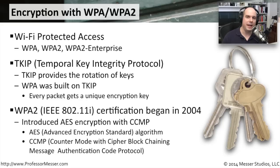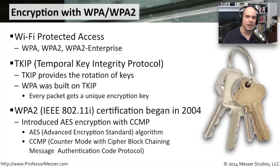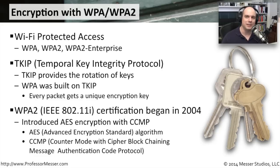In reality, everybody should have moved by this point to WPA2, which was the final certified version of WPA, released in 2004. WPA2 allows AES-level encryption — the Advanced Encryption Standard algorithm — which is a very powerful encryption method. It uses a protocol called CCMP, the Counter Mode with Cipher Block Chaining Message Authentication Code Protocol. That's quite a mouthful.